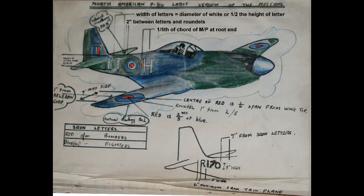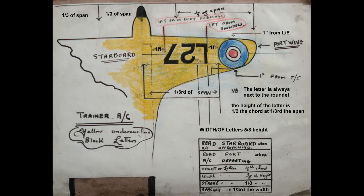Examples of roundels and lettering are shown here on a sketch of a North American 51D Mustang. This and the following image show sizes and positioning of letters and roundels on training aircraft.